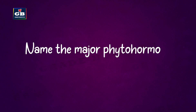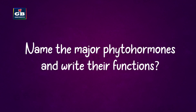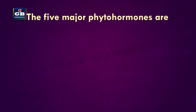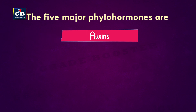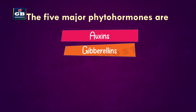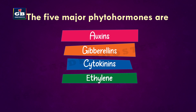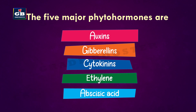Name the major phytohormones and write their functions. The five major phytohormones are auxins, gibberellins, cytokinins, ethylene, and abscisic acid.